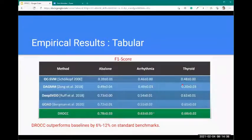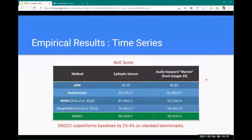DROCC was evaluated on three most common tabular datasets in literature: Abulon, Arrhythmia and Thyroid. It outperforms the baseline by 6 to 12% on the standard benchmarks. In time series, we evaluated DROCC against epileptic seizure dataset and Google keyword and observed gains of 2 to 4% against baseline standard benchmarks.